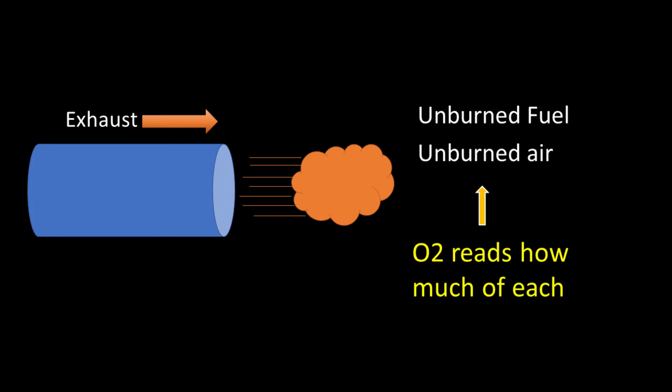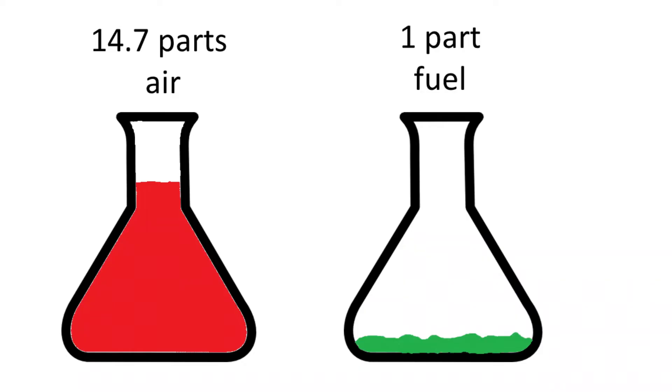If there's too much air in the exhaust, it's a lean condition. If there's too much fuel in the exhaust, it's a richer condition. Those are based on that stoichiometric ratio — stoic.